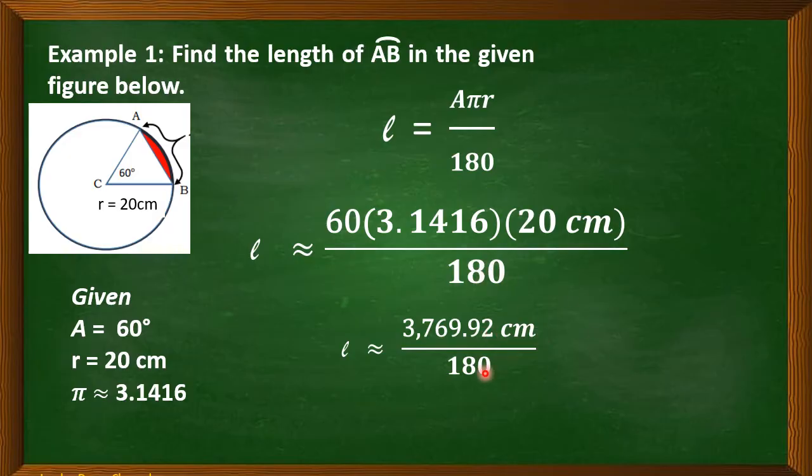Copy the denominator 180. Now, let's divide. 3769.92 cm divided by 180. And that is approximately equal to 20.94 cm. So, this is now the approximate value of our arc length.